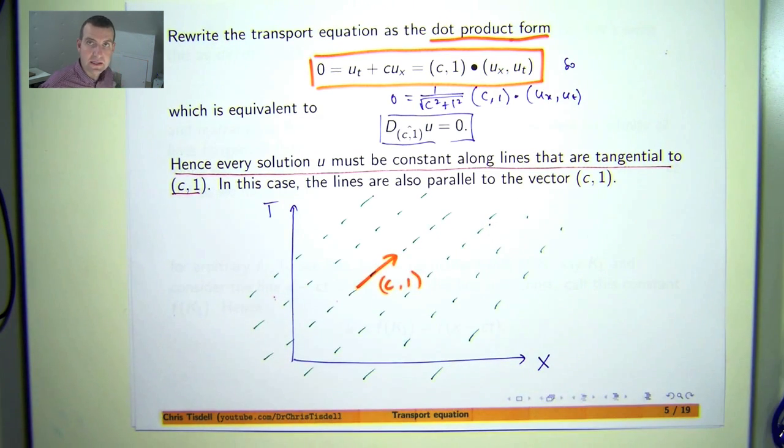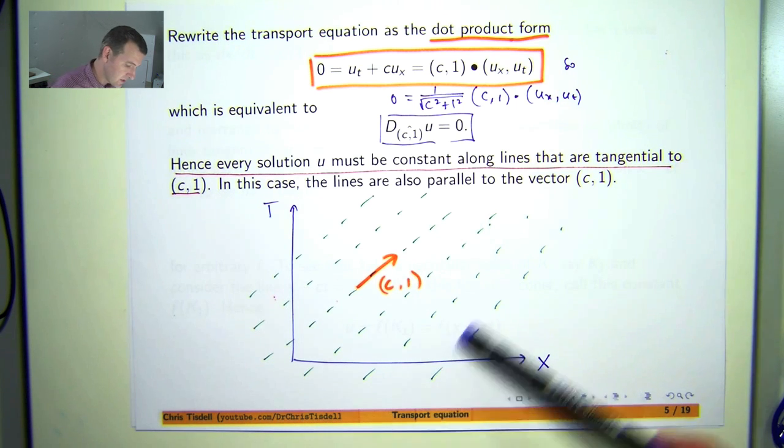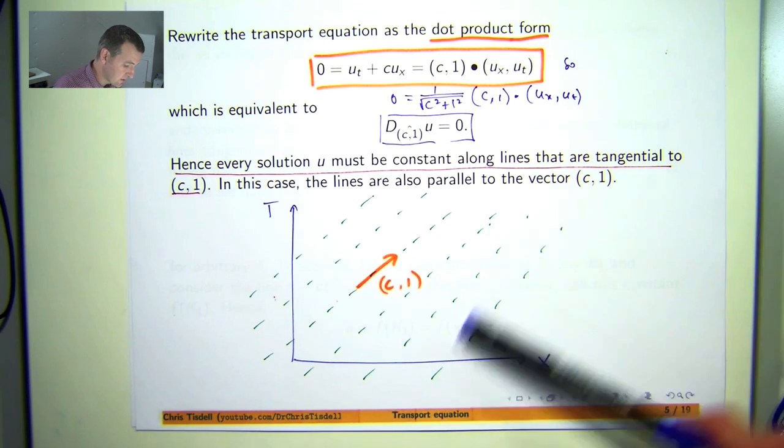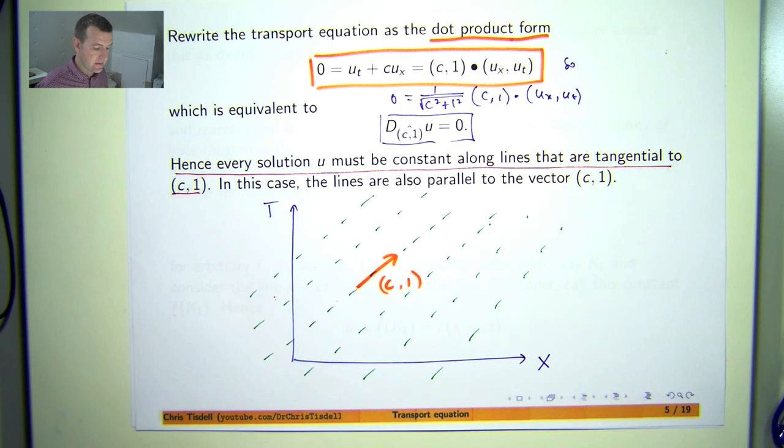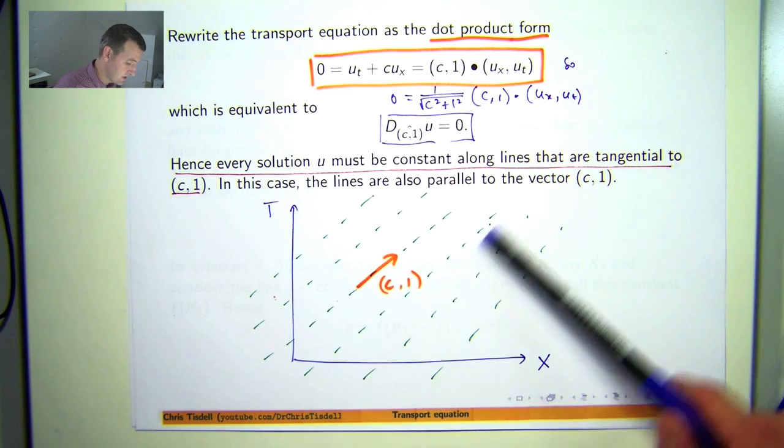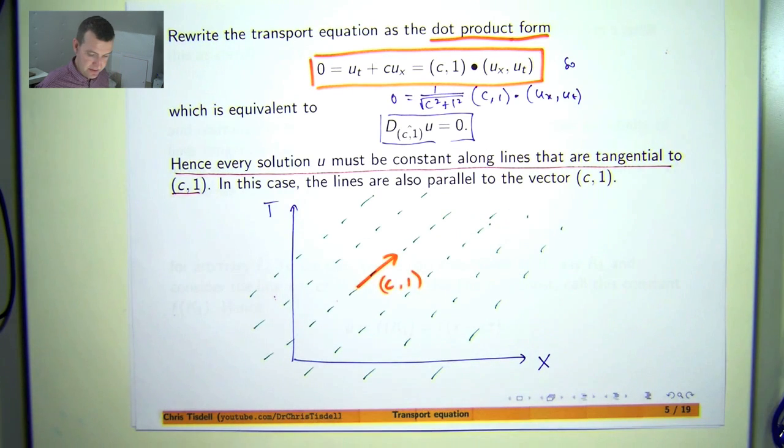Along each of these lines, u, the solution u, takes on one and only one value, a constant value. So along this line, u will not change. It will take on one value. On this line, u will not change. It will take on possibly another constant value. This one, this one, this one, etc.